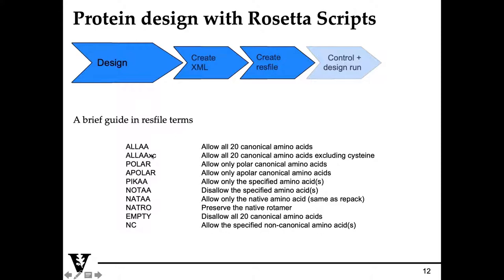For today's tutorials, we'll be telling Rosetta to design or allow design of all 20 canonical amino acids at certain positions, so we'll be passing the ALLAA flag. I'll be going through more of the actual structure of this res file later in the tutorial run through.